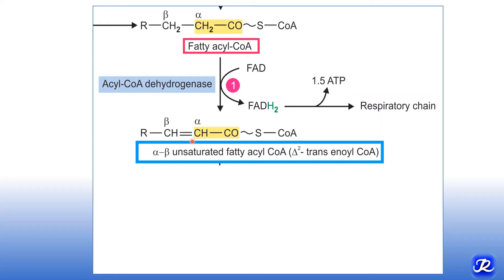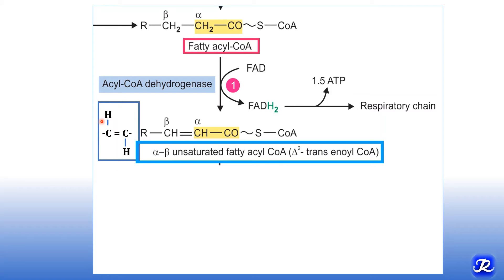It is called alpha-beta unsaturated fatty acyl-CoA, and Δ2 because the double bond is between carbon 2 and carbon 3. It is called trans because the hydrogen atoms are in the trans position, giving the name Δ2-trans-enoyl-CoA.